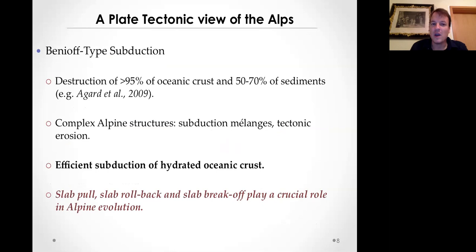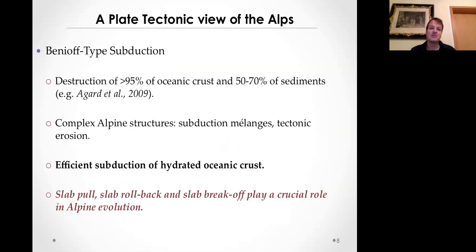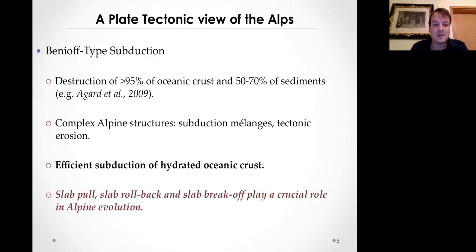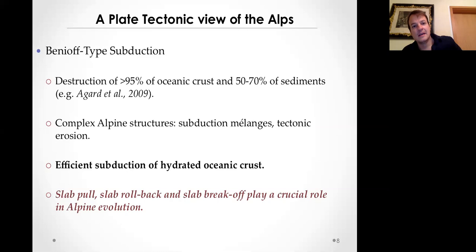This view implies a typical oceanic Benioff-type subduction where you destroyed up to 95% of your ocean crust and 55 to 70% of your oceanic sediments. Basically you had your wide ocean and very little is preserved in the Alps - everything was subducted prior to collision. The complex Alpine structures in the field - complex associations of oceanic sediments, continental crust, and serpentinites - are typically attributed to subduction melanges or compressional tectonics. The accepted model is that there was efficient subduction of hydrated ocean crust before continental collision, with slab pull, slab rollback, and slab break-offs playing a crucial role.